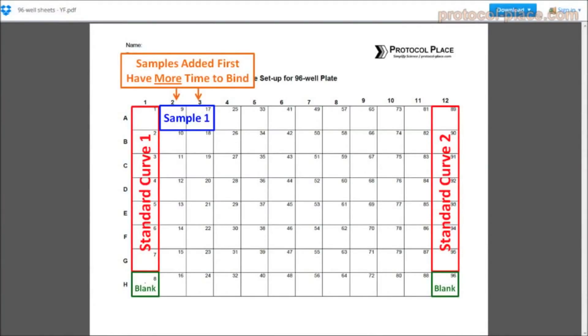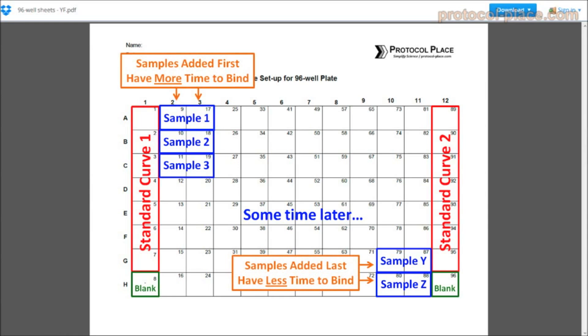If you think about it, the samples added to the plate first will be given a head start or have more time to bind to the capture antibodies in the absence of enzyme conjugate than the samples added to the plate last. This could result in samples added to the plate earlier having artificially higher measurements than those added after them.